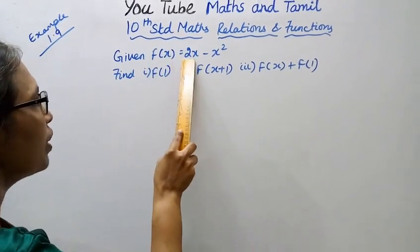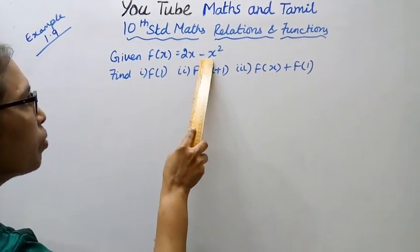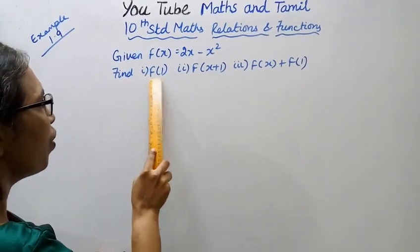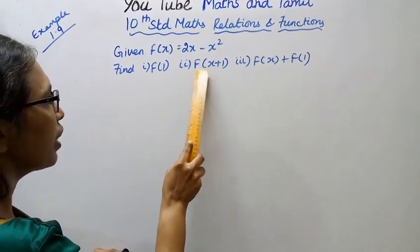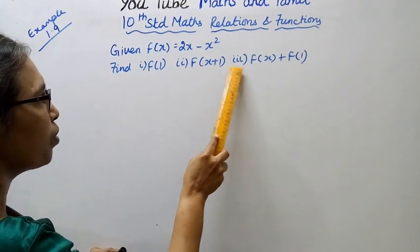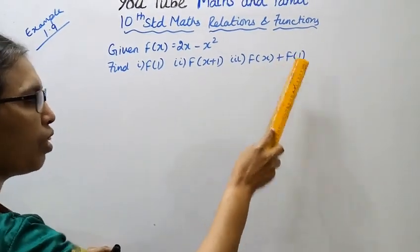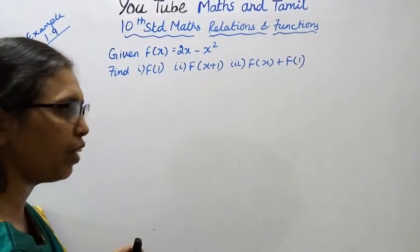Given f of x equal to 2x minus x square. Find: first, f of 1; second, f of x plus 1; third, f of x plus f of 1.